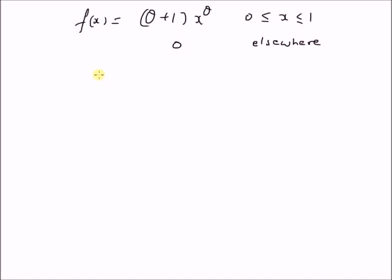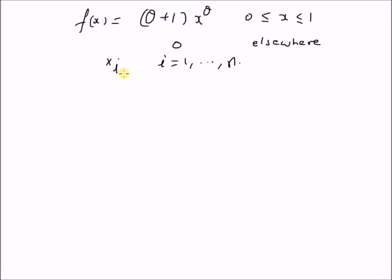Our goal is to find an estimate of the parameter theta from given observations x_i, where i is equal to 1 to n, and x_i are independent of each other.